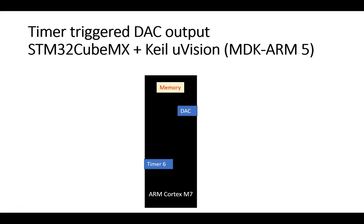The idea is that timer 6 will be set up so that it will generate an interrupt every 1/8000th of a second — so 8 kHz. That will trigger the DAC. The DAC will grab values from memory and send it out on the output pin. This is the overall general setup that we want to do.